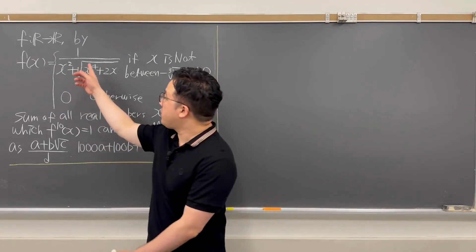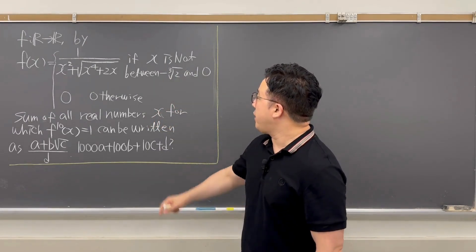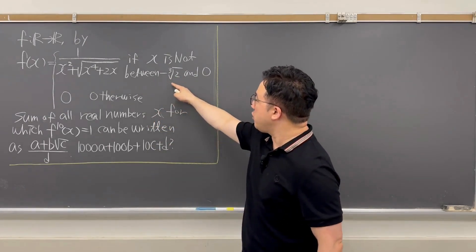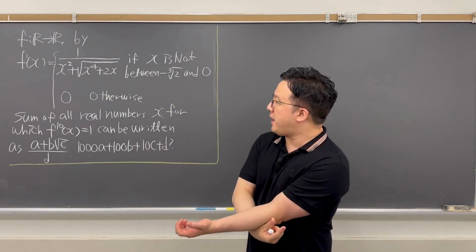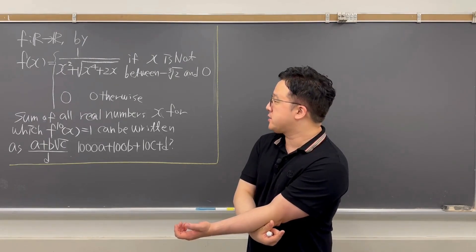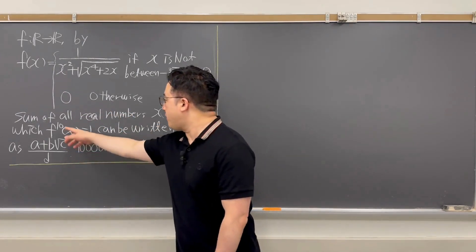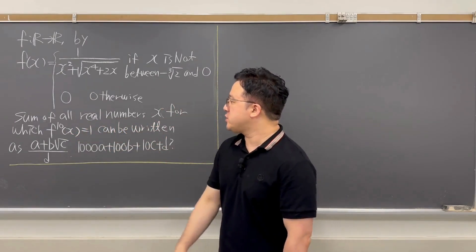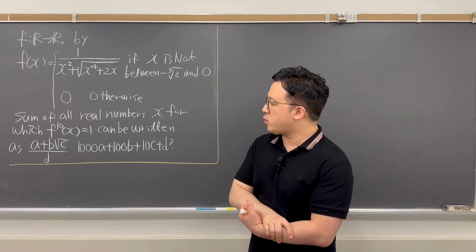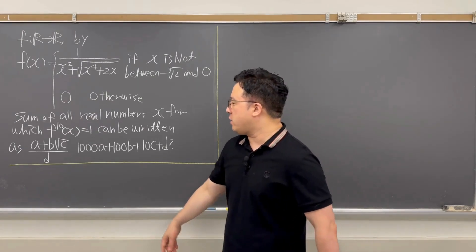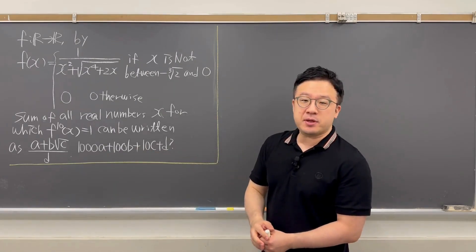Your f is from ℝ to ℝ, and f(x) is a piecewise function such that if x is not between negative cube root of 2 and 0, then f(x) = 1 over (x² + √(x⁴ + 2x)). Otherwise it is 0. The question asks for the sum of all real x for which f₁₀(x) = 1, written as (a + b√c)/d. What is the value of 1000a + 100b + 10c + d?